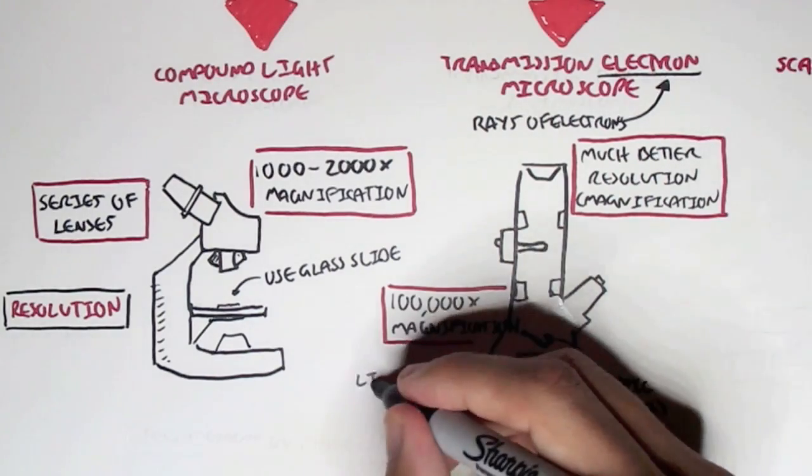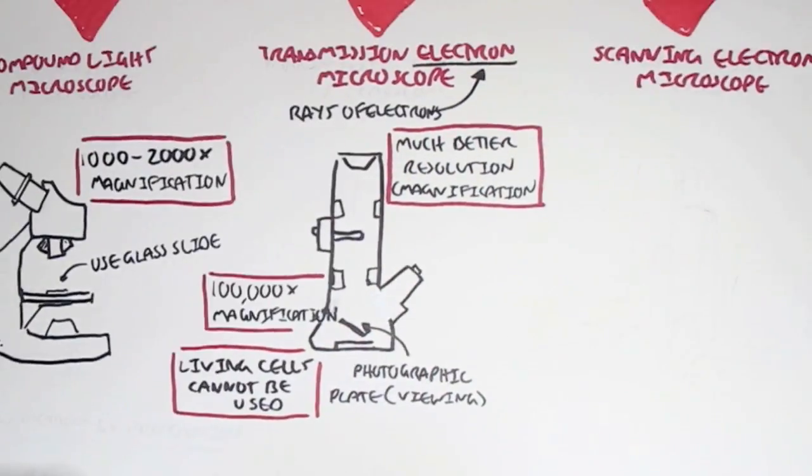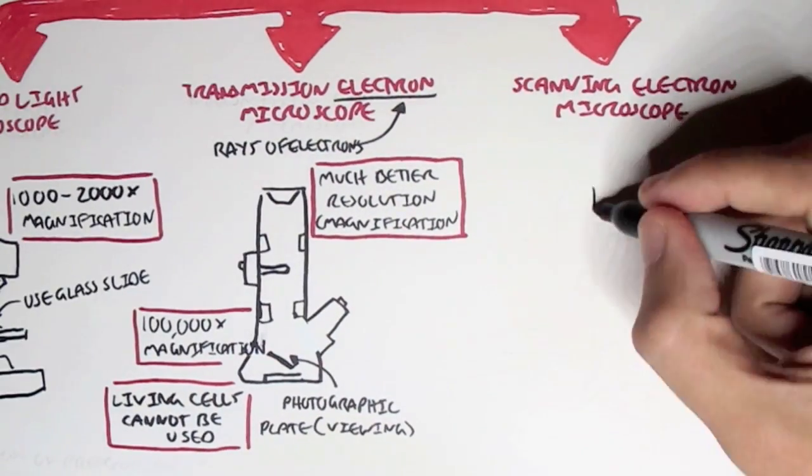However, the bad thing about this Transmission Electron Microscope is that we cannot actually use living cells, whereas a Compound Light Microscope we could.